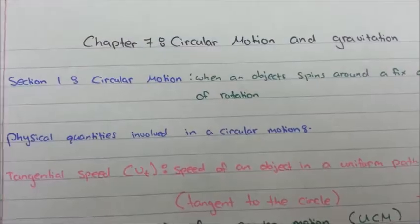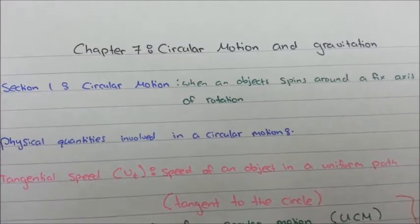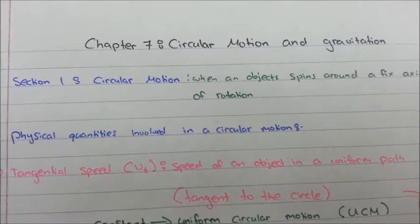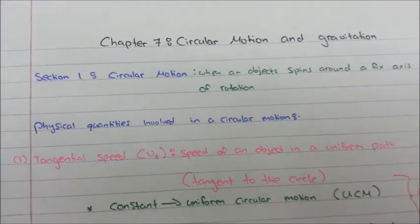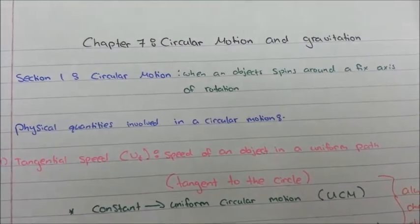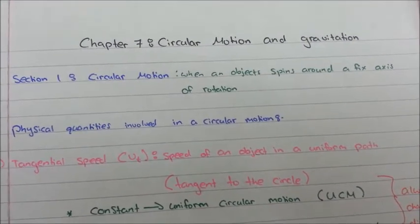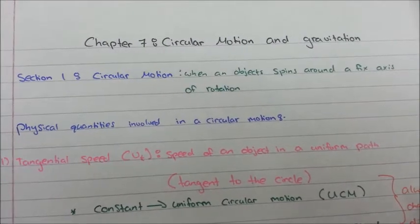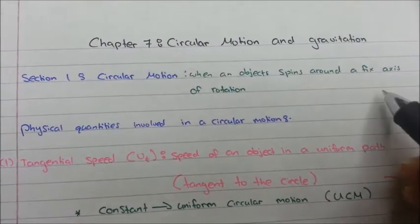Today I will be doing a quick revision for Chapter 7, which talks about circular motion and gravitation. In this section, we will be talking about circular motion. Circular motion is when an object spins around the fixed axis of rotation.